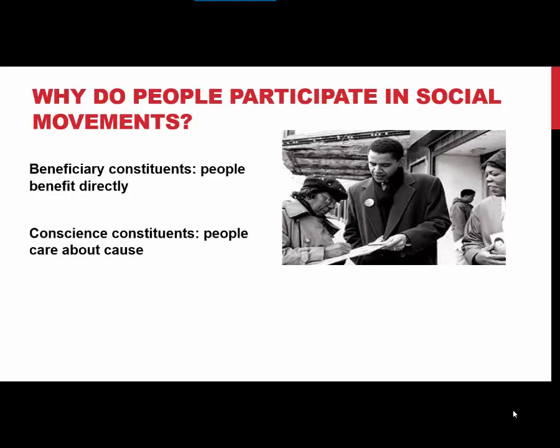Conscience constituents are people who just care about the cause — citizens or documented immigrants who nevertheless align themselves with the DREAMers. In almost all social movements, there are both beneficiary and conscience constituents. A historic example: African Americans in the South were the beneficiary constituents of the Civil Rights Movement, while whites and others who came from outside the South to participate would be examples of conscience constituents.